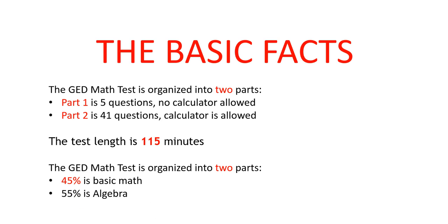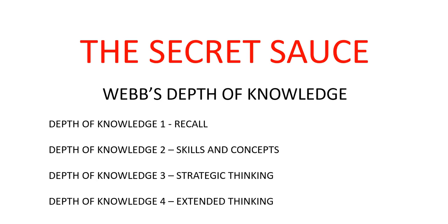And beyond the two parts, the GED test is also organized in two more content areas. The first part is basic math, which is 45% of the test. And the second part is algebra, which is 55% of the test, and which is the area where most people have trouble.